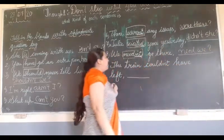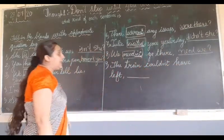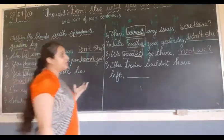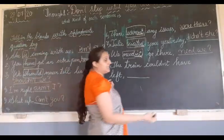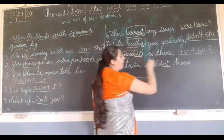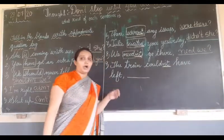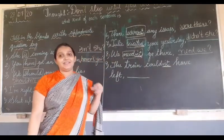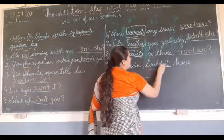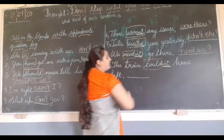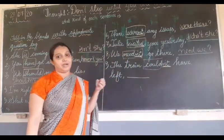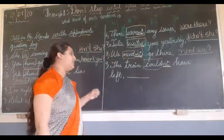Now, next: 'The train couldn't have left.' Here also, the sentence is negative — 'could not.' But they have given the helping verb, that is 'could.' So we can easily make the question tag — that is 'could it?'